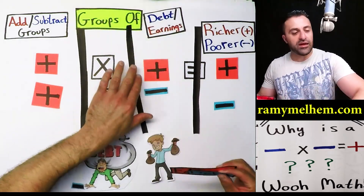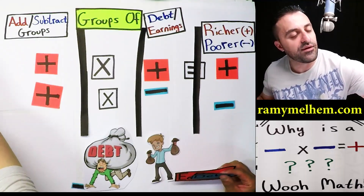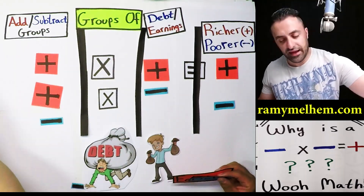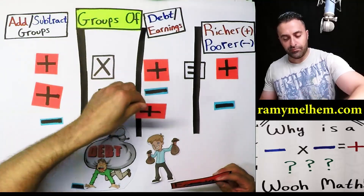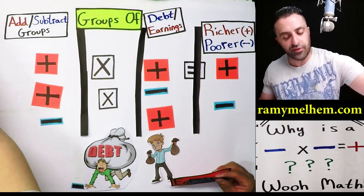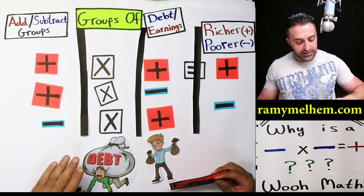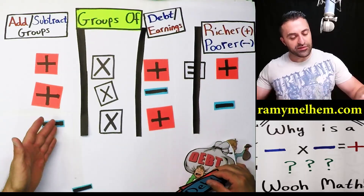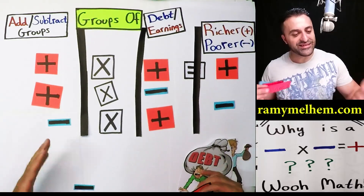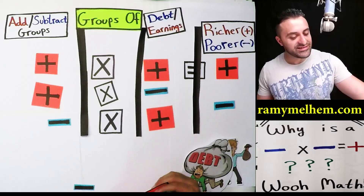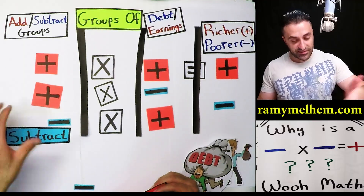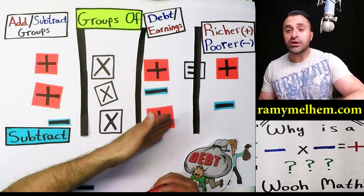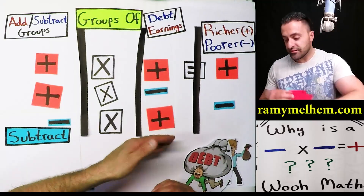How about negative multiplied by a positive — flip the order around. Now what is this involving? This negative is saying subtract. Subtract groups. And what is this one — debt or earnings? Earnings.